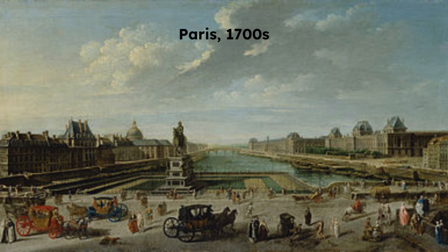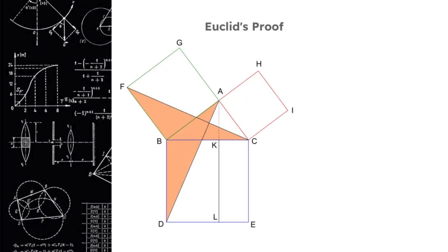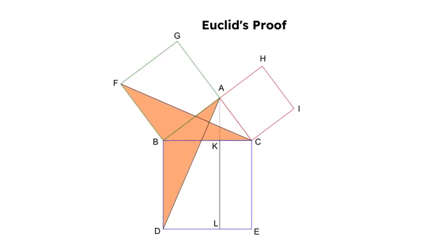Recognizing Blaise's extraordinary intellect, Étienne Pascal moved the family to Paris to provide his son with a better education. By the age of 12, Blaise had already begun to explore geometry on his own, rediscovering many of Euclid's theorems without any formal training.